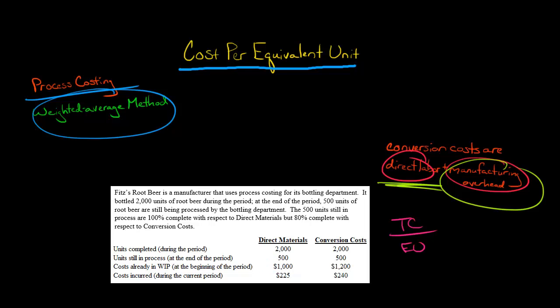The costs that you started with, and then the costs you incurred during the period, you add those together. Now we're going to divide it by the number of equivalent units.